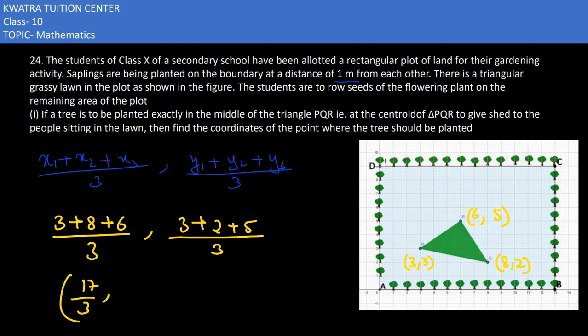And 3 plus 2 is 5, 5 plus 5 is 10, 10 over 3. So here we can say the centroid of the triangle would be 17 over 3 and 10 over 3.